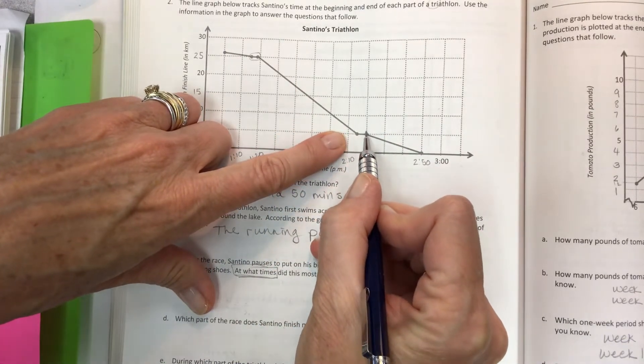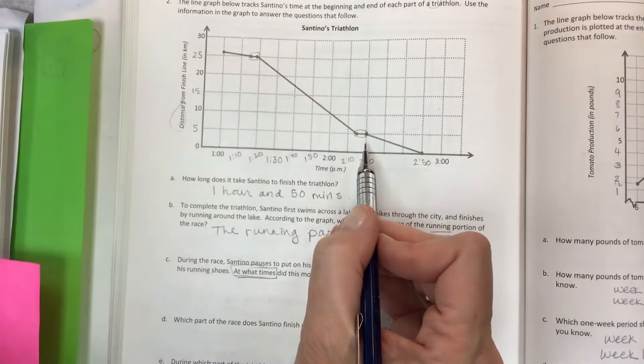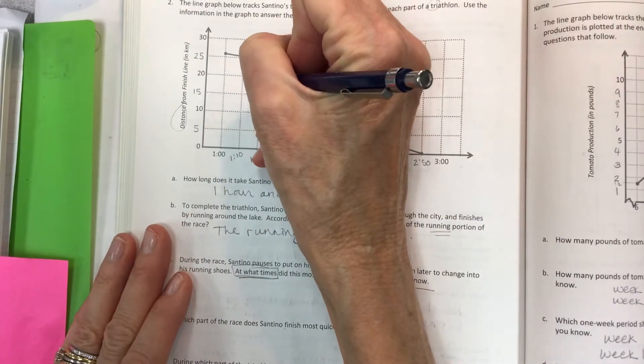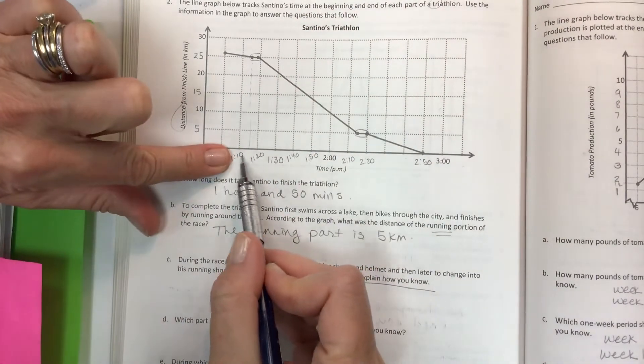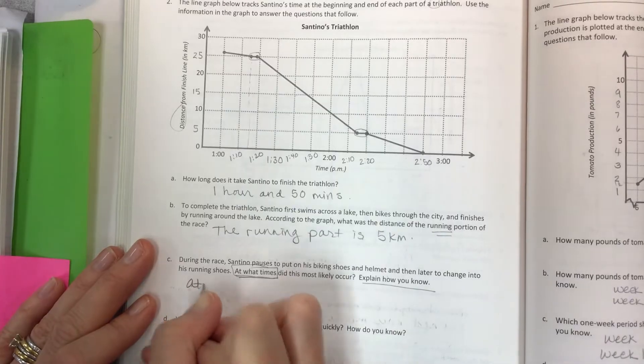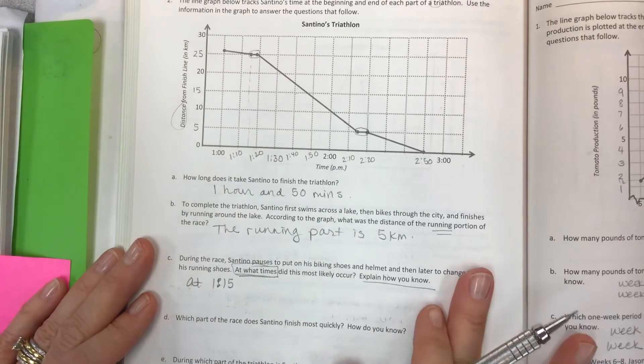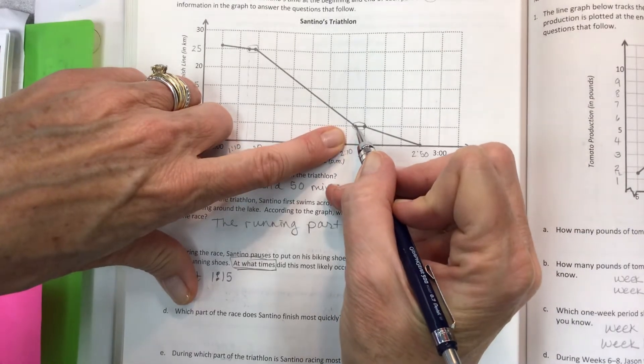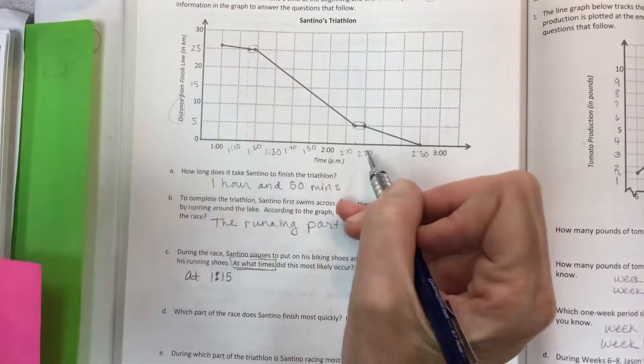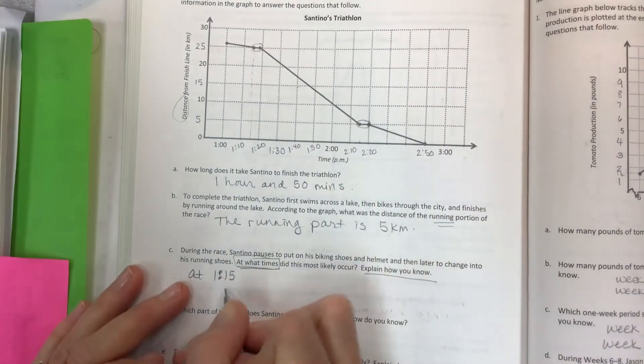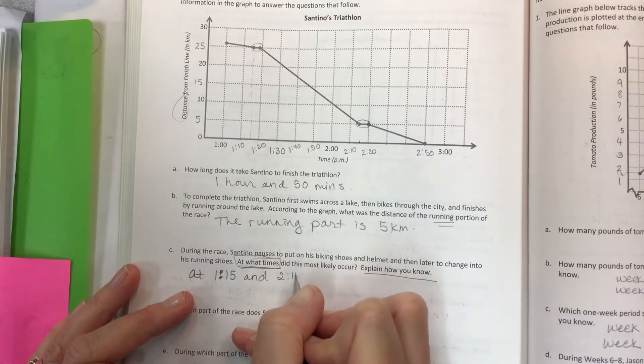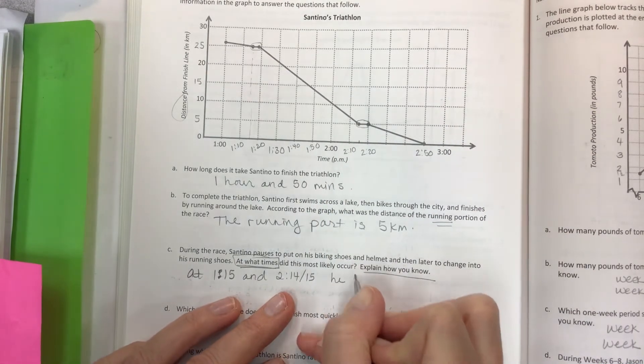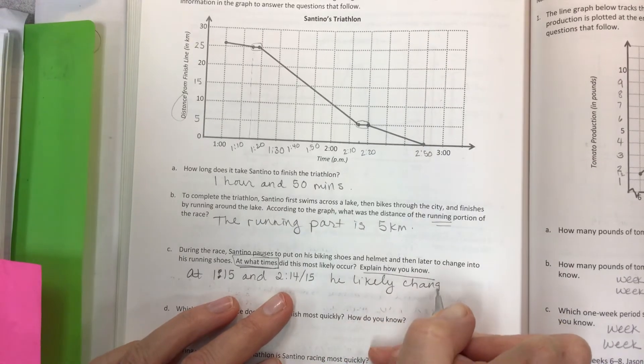Got to put on your running shoes because running shoes are different than biking shoes. And so this and this. What times? The times are on the bottom. Draw a connecting line or at least try to figure out what is then in between 1:10 and 1:20. At 1:15, he likely changed the first time. And this one, it doesn't appear to be exactly in the middle. If you really wanted to be precise, you could say instead of 2:15, you could say 2:14. But 1:15 and 2:14 or 2:15 if you want because it's almost in the middle. He likely changed gear.